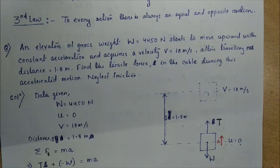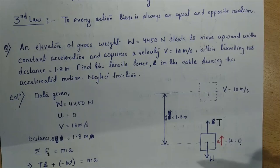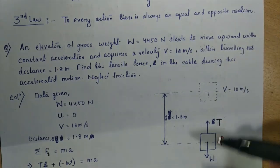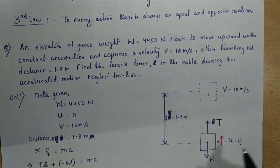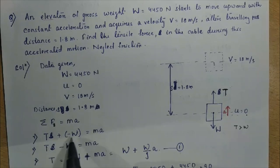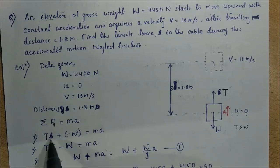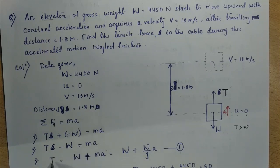Since the elevator moves upward, T must be greater than W. Writing the equation: T minus W equals MA, rearranging gives T equals W plus MA. Substituting M equals W/G, we get T equals W plus (W/G) times A. W is given as 4450 N and G is 9.81. We need to find A first.